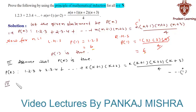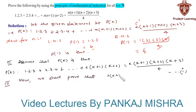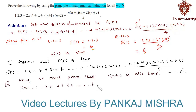In our final step — the generalization step — we prove that P(k+1) is also true. P(k+1) states that 1·2·3 + 2·3·4 + ... + k(k+1)(k+2) + (k+1)(k+2)(k+3) equals the required expression.